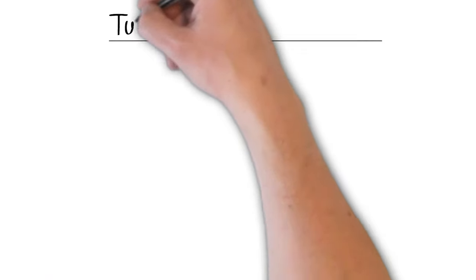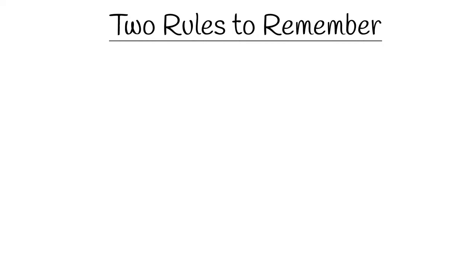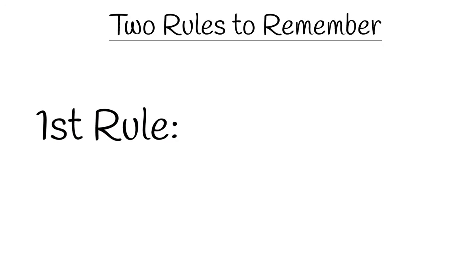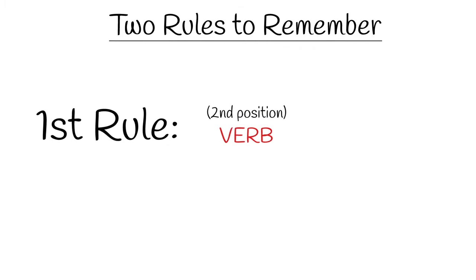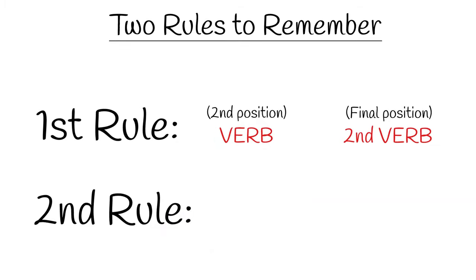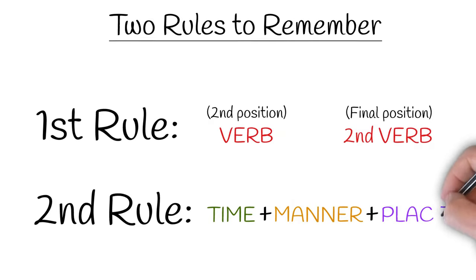Here are our two rules to remember from today. The first rule is about the verbs: the verb must come in the second position, and if there is a second verb, that must come in the final position. Our second rule is about the word order of the other elements in the sentence: apart from the subject, they go in this order — time, manner, place. Or you can remember it as T-M-P.